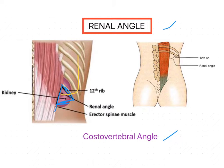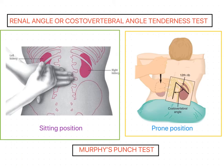Regarding the clinical importance of this renal angle: tenderness in the kidney is elicited at this angle. Tenderness is pain or discomfort when the affected area is touched. This tenderness at this angle is due to any kidney pathology. This tenderness is elicited by a test called the renal angle test, or costovertebral angle tenderness test.